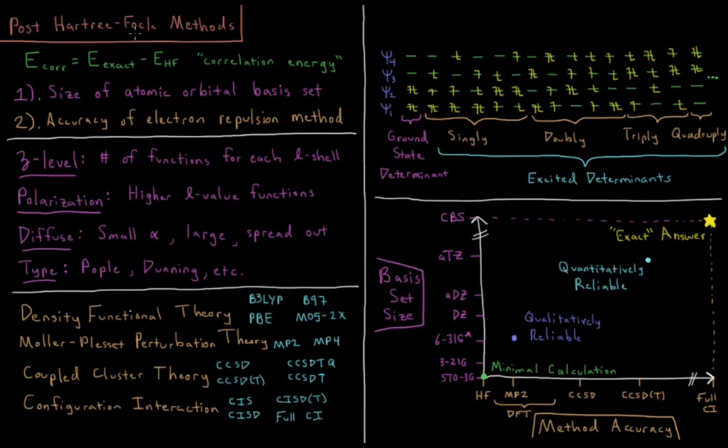So that is the basics of post-Hartree-Fock methods. Your two concerns are the size of your basis set, what your basis set looks like, and the accuracy of the method you can use. That's all limited based off the number of atoms you have and the number of basis functions you need as for what you have computational time and the software to be able to do, getting you as close to the exact answer as you want to go with the CPU time available to you.